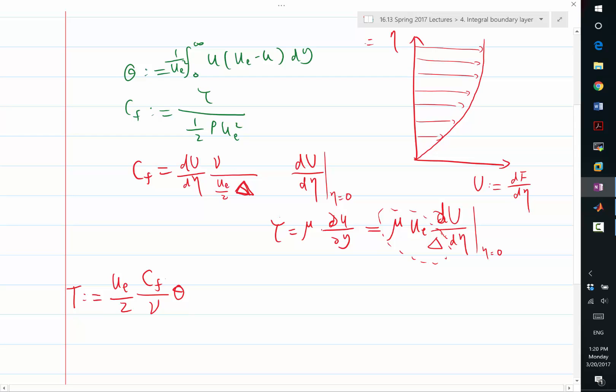So I define this as another function t. The nice thing about this t is that given a Falkner-Skan boundary layer profile, I know exactly what t is. I can compute t basically just by plugging this CF formula into here. Half of ue cancels, nu cancels. And the only thing left is theta divided by delta, which is equal to 1 in our numerical solution of the Falkner-Skan equation.